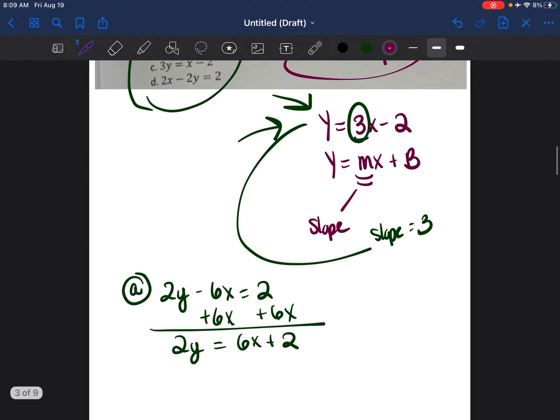I know that there's going to be a question that says, why did you write the 6X first? I wrote the 6X first because in Y equals MX plus B form, the X value comes first. And so that's why I wrote it that way. So now we want to get the Y by itself. So we're going to divide both sides by 2. And it's going to be Y is equal to 3X plus 1.